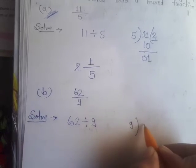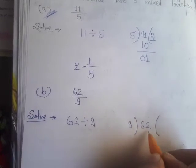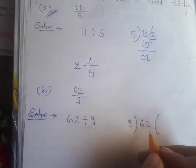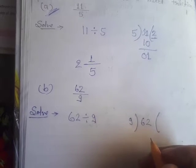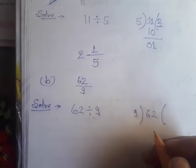So 9 is divided into 62. Now we need to find which multiple works. It has to be less than or equal to 62, but not greater than.